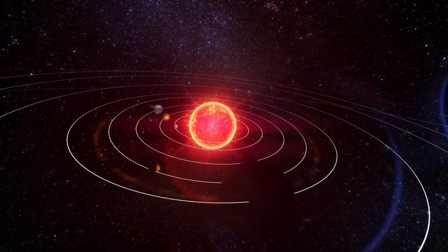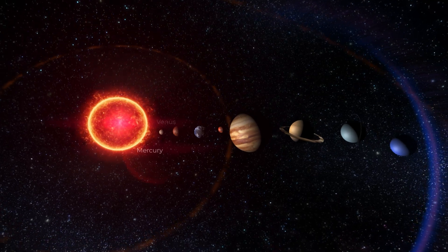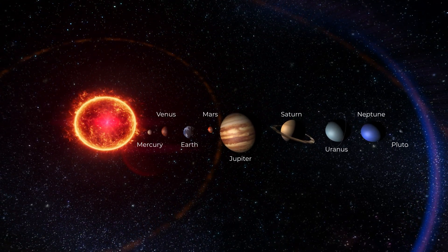Uranus. We are learning about the planets in our solar system. Today, we are traveling all the way to Uranus, the seventh planet from the Sun.